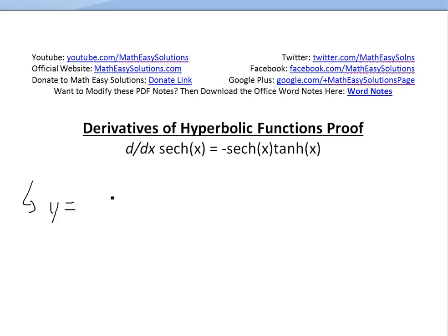So let's say y equals sech of x, and this just equals 1 divided by hyperbolic cosine of x.